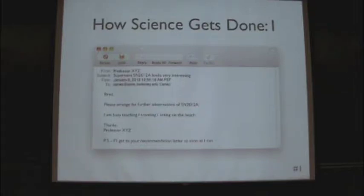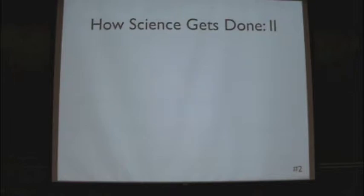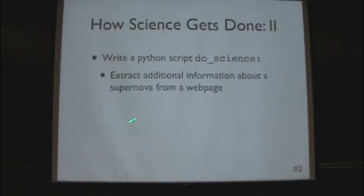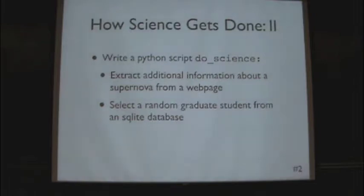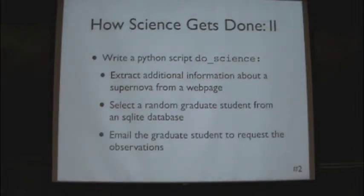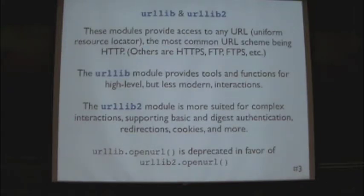I have a couple choices at this point. I could actually try to put some time and effort into finding out what's going on — is this thing really interesting, what are the best resources we have to observe this? Or because I'm very fortunate that I'm not really at the lowest tier of the totem pole — there are fortunately graduate students below me — I can get them to do the work for me. So we're going to write a Python script called Do Science. It's going to extract some additional information about this source from a web page, select a random graduate student from an SQLite database in the astronomy department, and send them an email to ask them to do the actual work.